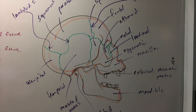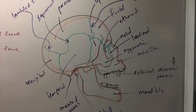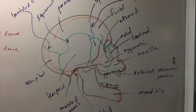Now we've got the lateral view of the skull. Big bone on the lateral side — parietal. Forehead — frontal. Back of the head — occipital. Side of the head — temporal. Lower jaw — mandible. Upper jaw — maxilla. Cheek, forming that arch, starts with a Z — zygomatic.